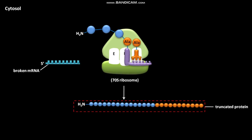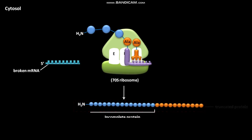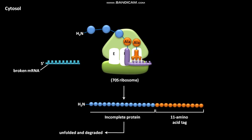In this truncated protein, the C-terminus of the incomplete protein is added with an 11-amino acid tag. This 11-amino acid tag signals proteases, and in the presence of these proteases, the entire truncated protein is unfolded and degraded.